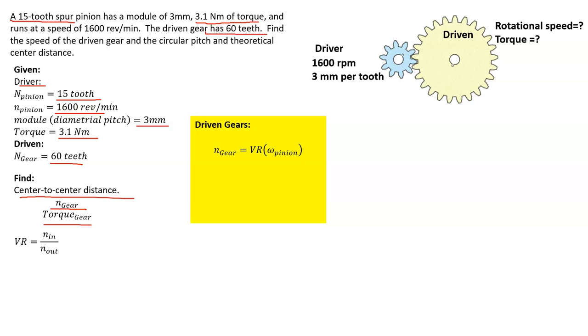Which is equal to the velocity ratio times the speed of the pinion. I should have this as lowercase omega instead to keep it consistent, but you've got the number of teeth—15 to 60—and the output speed of 1600. What you're seeing is there's a 4-to-1 relationship here. So 15 over 60 times 1600.